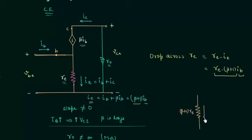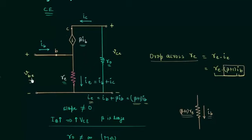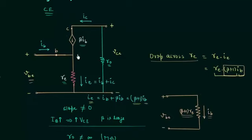Current flowing through the resistance beta plus 1 RE is equal to IB. VBE is the input voltage, and it equals the drop across resistance beta plus 1 RE when the current flowing through it is IB. So the drop across resistance beta plus 1 RE when current flowing is IB is also equal to the input voltage VBE. This is the input side, and on the output side we have the dependent current source and the output resistance RO.